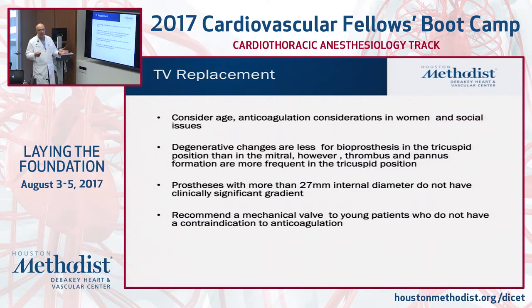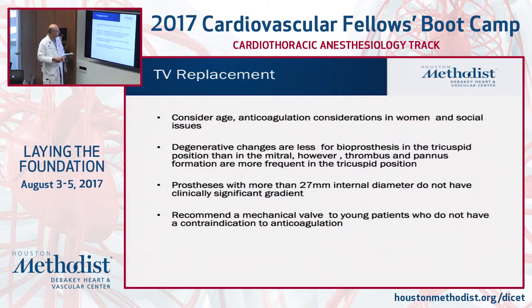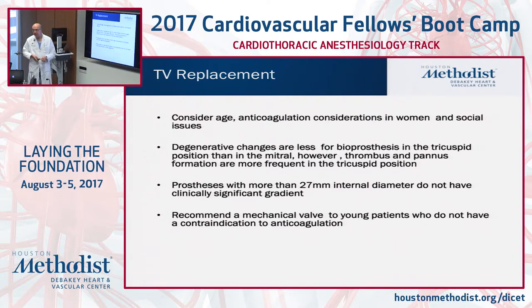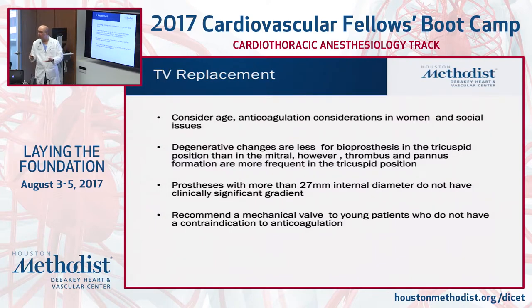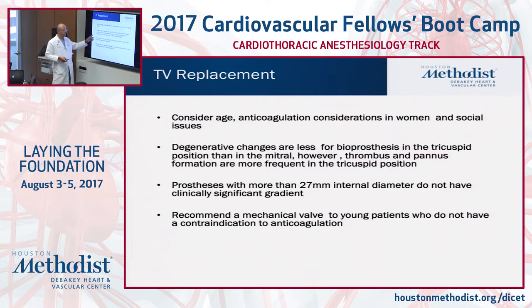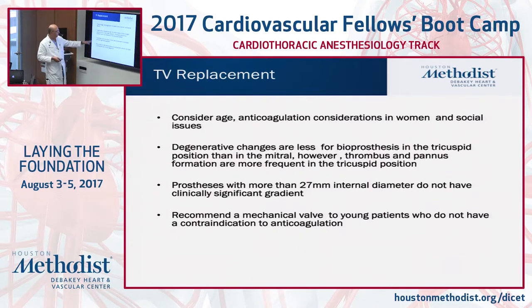When considering tricuspid valve replacement, you must weigh age, anticoagulation considerations — particularly in women of childbearing age — and social issues when deciding between a mechanical valve and a bioprosthesis. Degenerative changes in bioprostheses are much less in the tricuspid position than in the mitral position because leaflet stresses are much lower, but there is a greater incidence of thrombus and pannus formation in the tricuspid position due to the low-flow state. A prosthesis with more than a 27-millimeter diameter will not have clinically significant gradients.